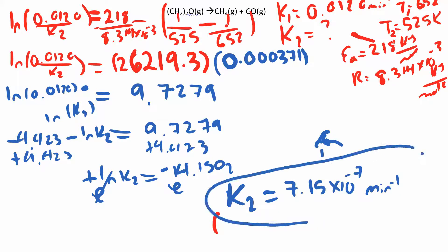So it's just a little bit of math in order to solve for that. But as long as you have four out of five of those things, K1, K2, T1, T2, and activation energy, four out of five, you can solve for the rest of it.